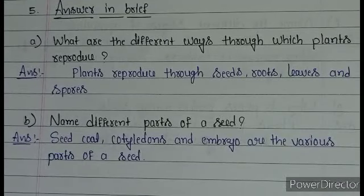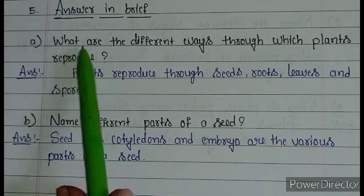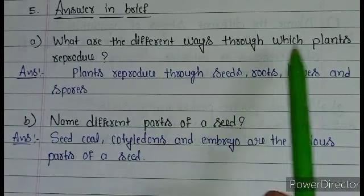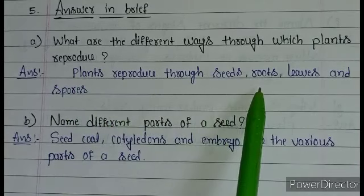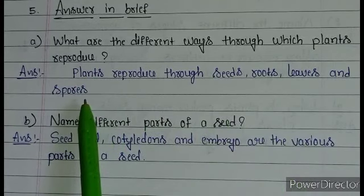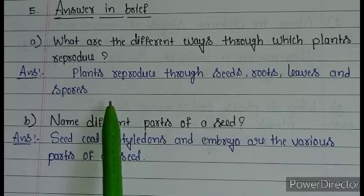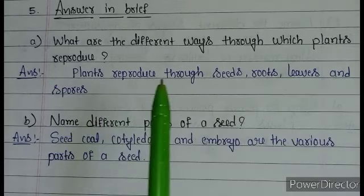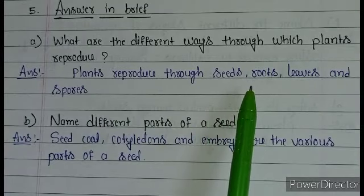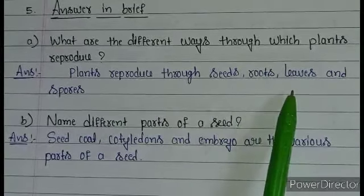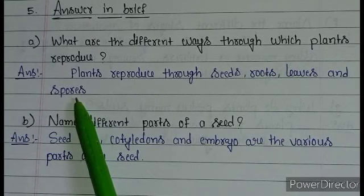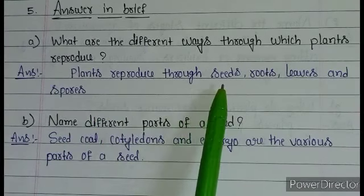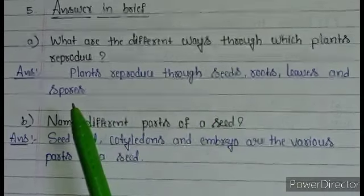Next important topic: answer in brief. Question A: what are the different ways through which plants reproduce? Answer: plants reproduce through seeds, roots, leaves, and spores. Some plants produce new plants by seeds, some by roots, some by leaves, and some — like ferns — produce new plants by spores.